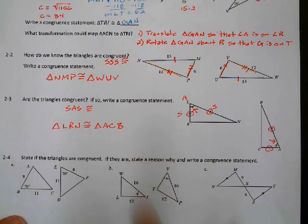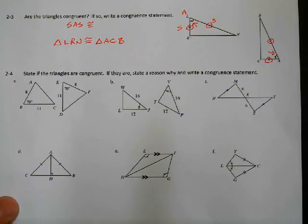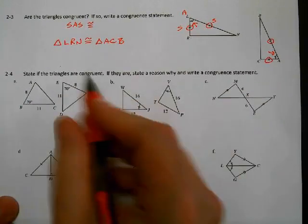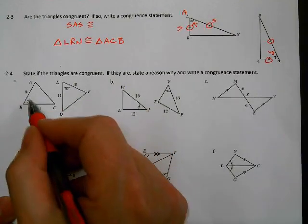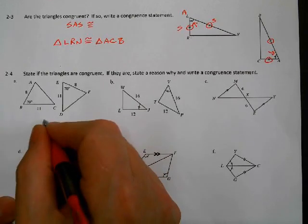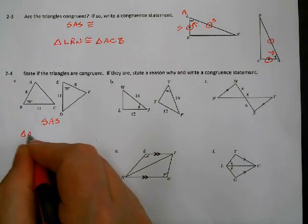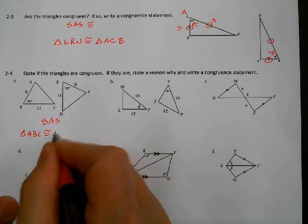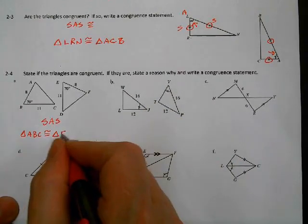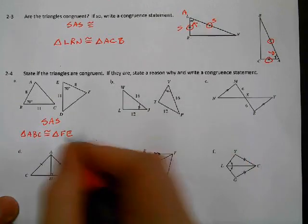Last part: state whether these are congruent. I've got 8, 70°, 11 and 8, 70°, 11 — that's Side-Angle-Side and Side-Angle-Side. The angle is included for both, so it works. SAS. Congruent statement: triangle ABC — A is between 8 and blank, F is between 8 and blank, so A and F go together; B is 70° and E is 70°, so they go together; C is between 11 and blank and D is between 11 and blank. So triangle ABC is congruent to triangle FED.